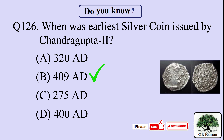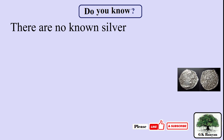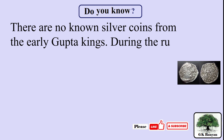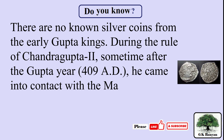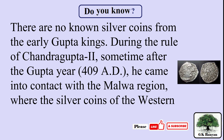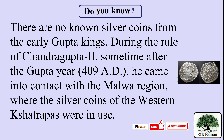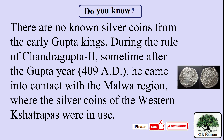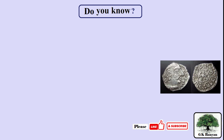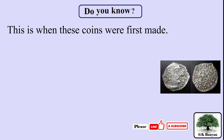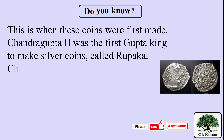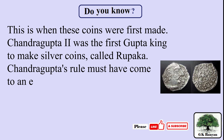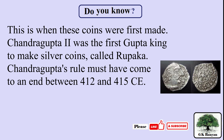The right answer is B. 409 AD. There are no known silver coins from the early Gupta kings. During the rule of Chandragupta the Second, sometime after the Gupta year 409 AD, he came into contact with the Malwa region where the silver coins of the Western Kshatrapas were in use — this is when these coins were first made. Chandragupta the Second was the first Gupta king to make silver coins called Rupaka, and his rule came to an end between 412 and 415 CE.